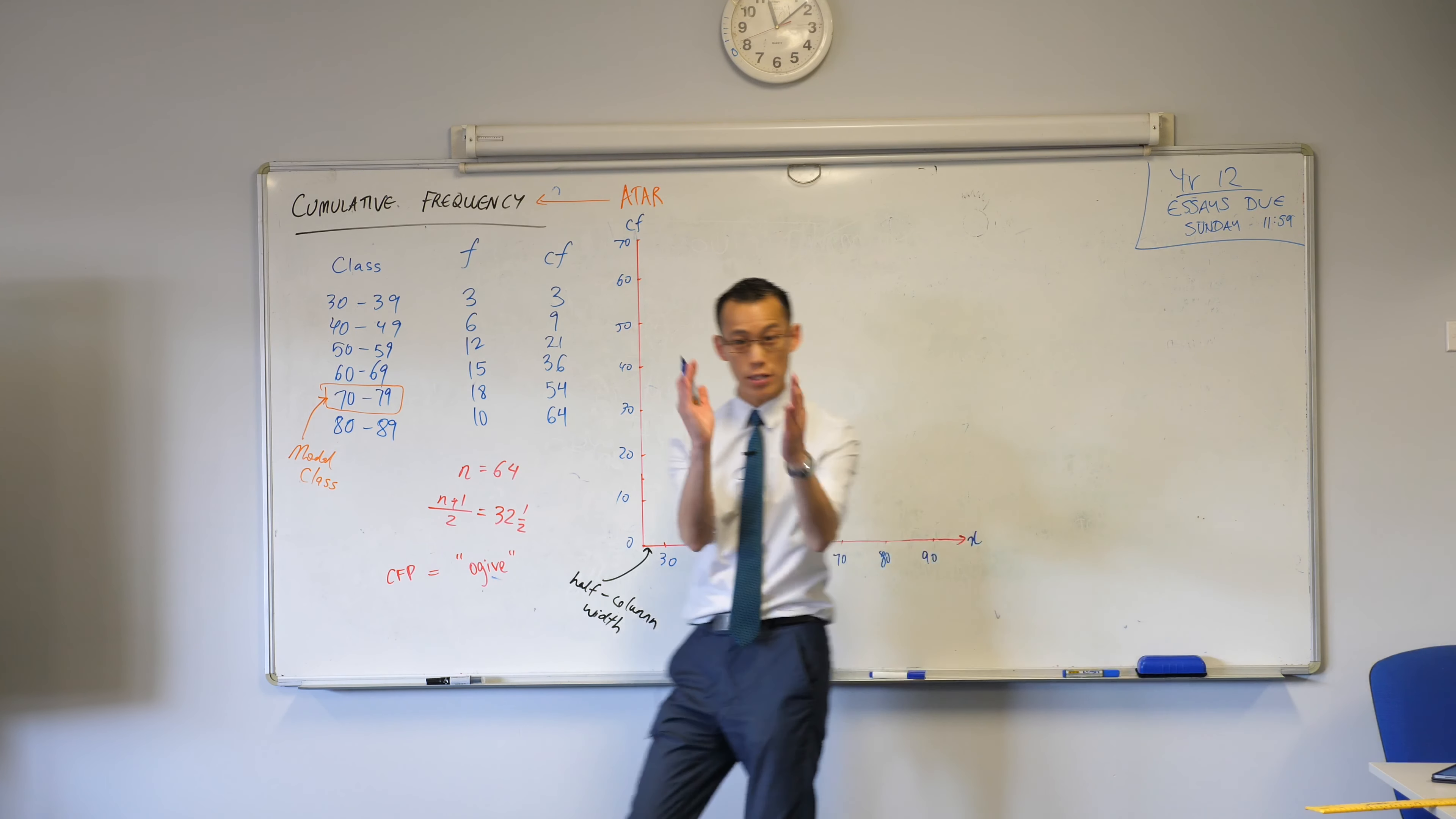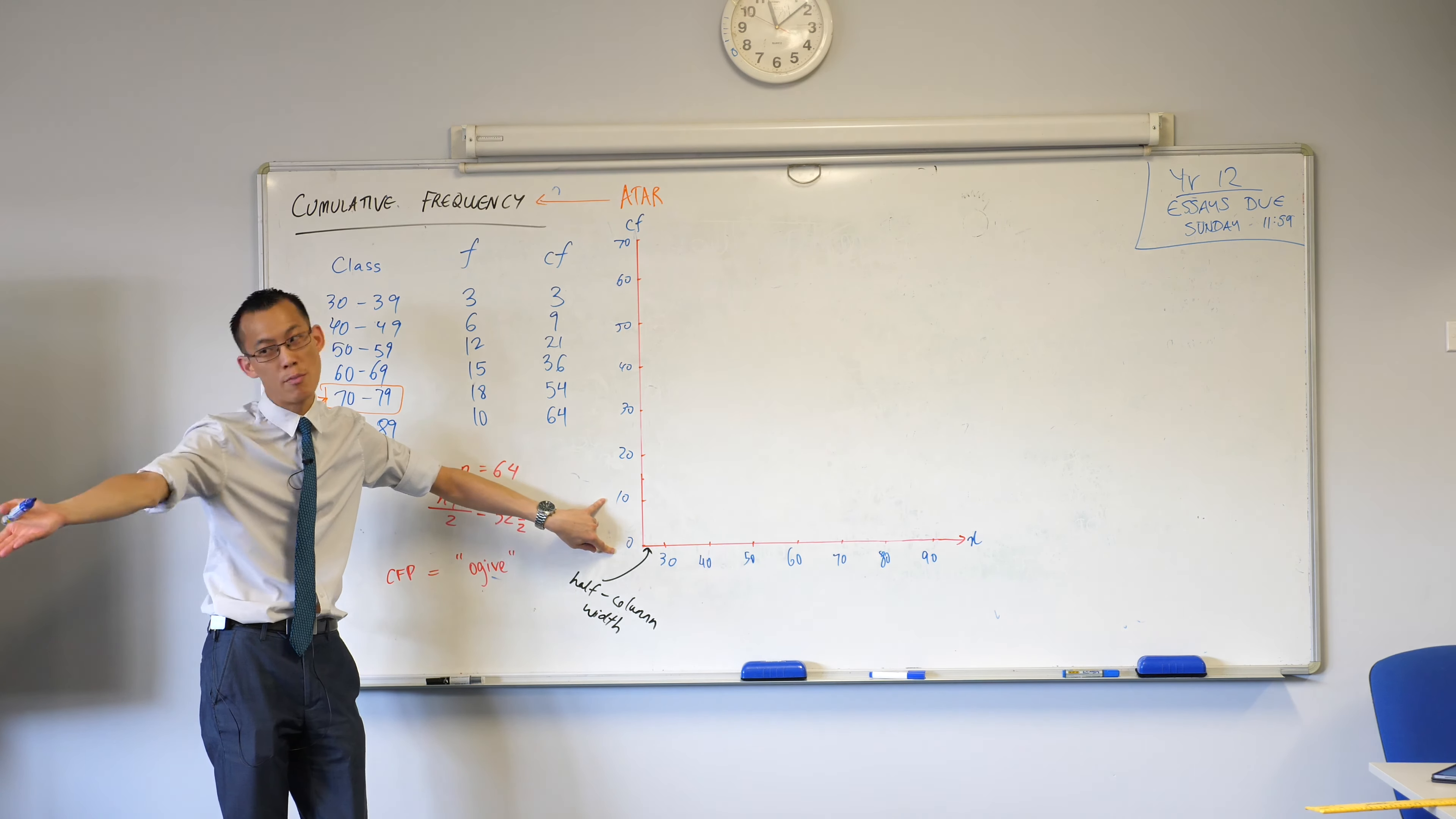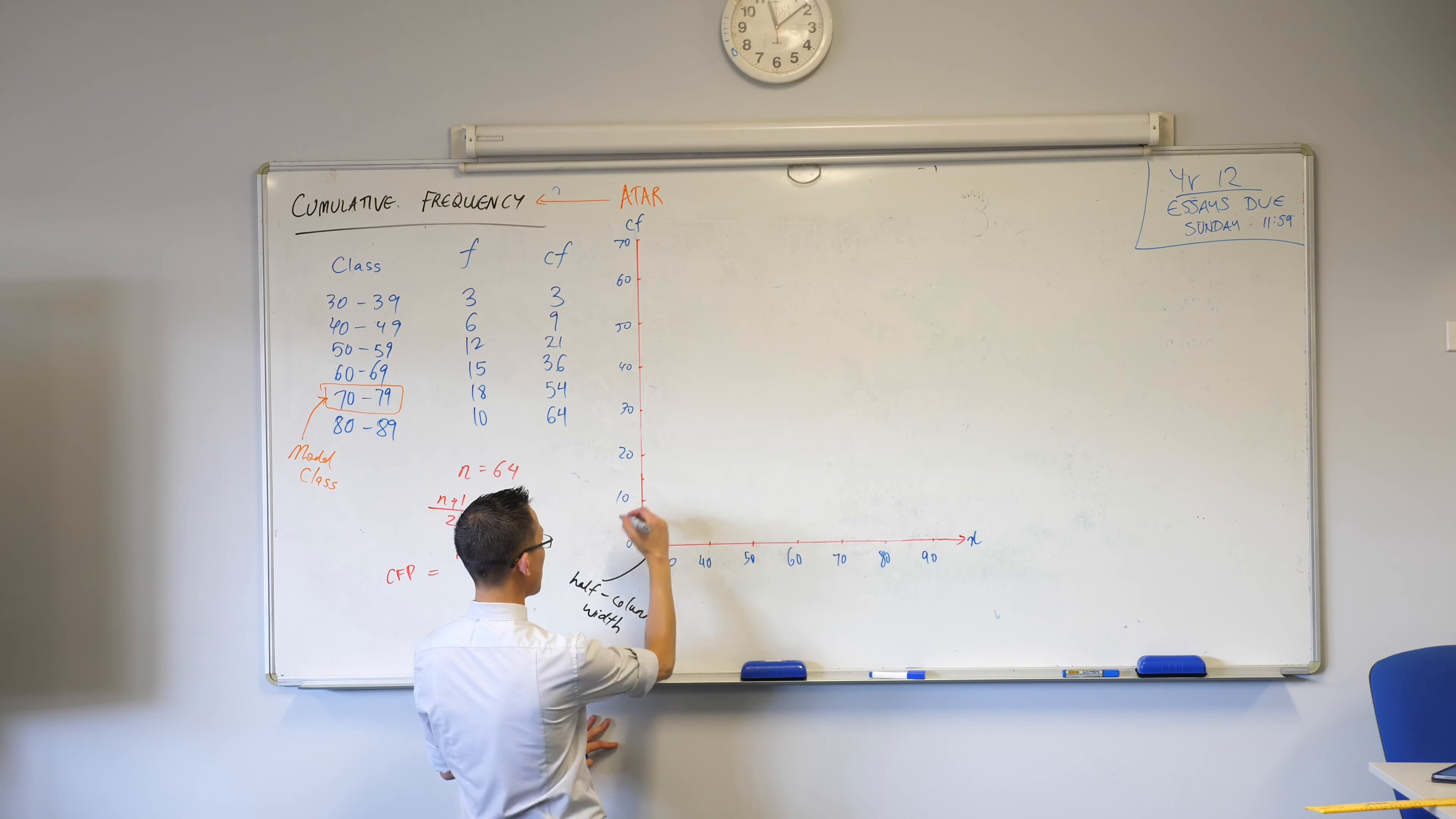I'm going to begin with the first class, 30 to 39. I need to go up to 3, right? Handy for me, this is 10 centimeters. So I'm just going to go up 3 centimeters. You might be 3 millimeters, whatever is the appropriate scale. But the scale actually does matter. So please measure that, use your grid, all that kind of thing.